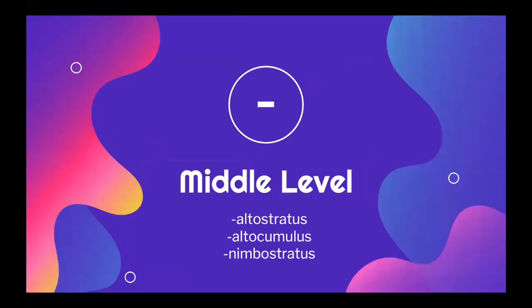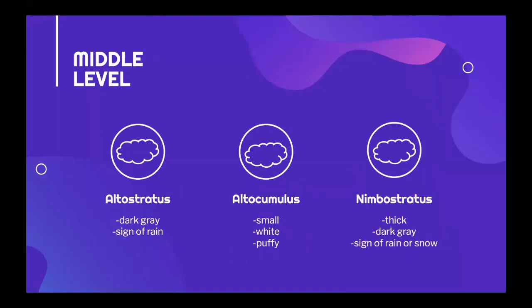On the mid-level we have altostratus, altocumulus, and nimbostratus clouds. Altostratus clouds are dark gray and they're usually a sign of rain in the coming day. Altocumulus clouds on the other hand are small, white, and puffy. Nimbostratus clouds are thick and dark gray. They appear when it's going to rain or snow.